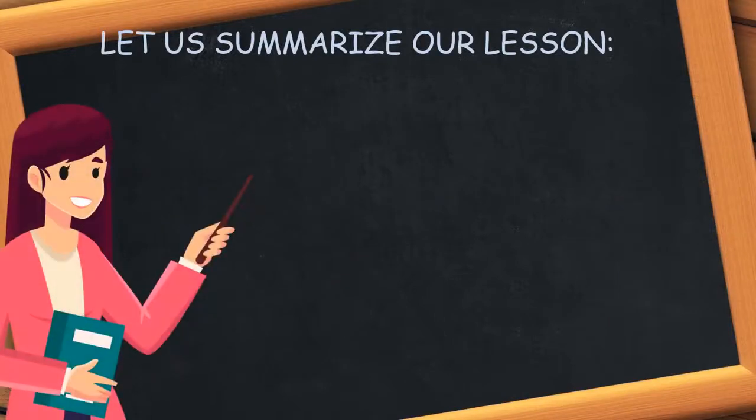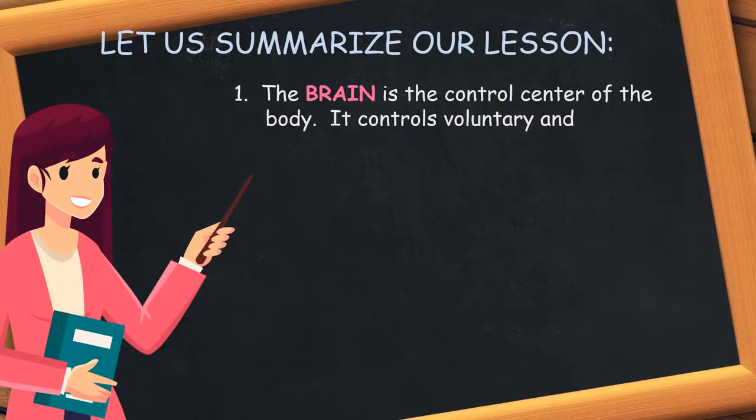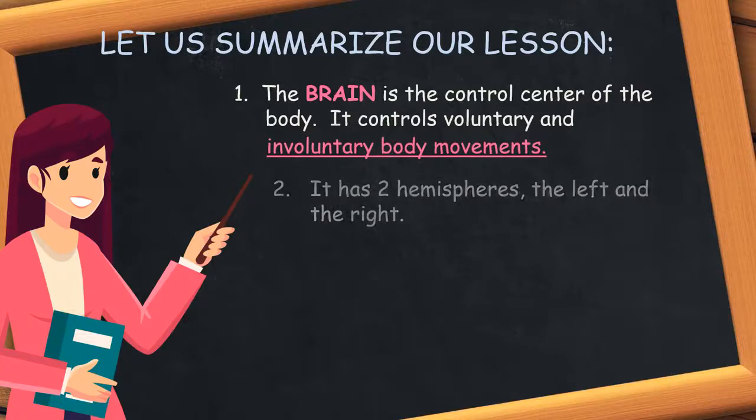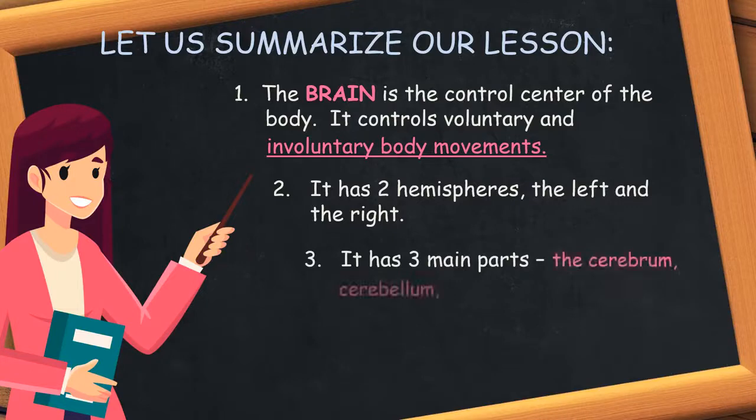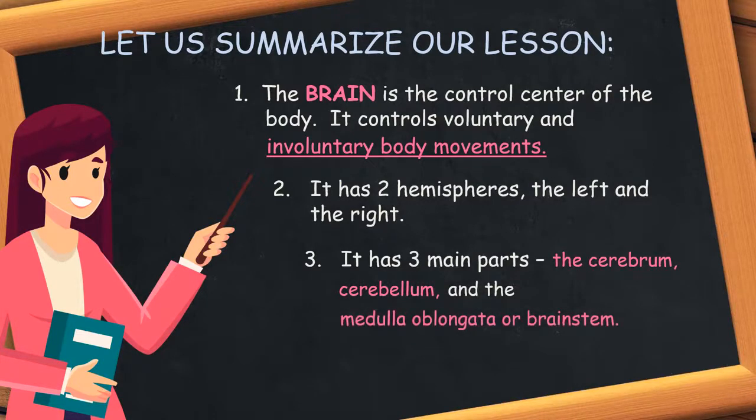Let us summarize our lesson. The brain is the control center of the body. It controls voluntary and involuntary body movements. It has two hemispheres, the left and the right. It has three main parts: the cerebrum, cerebellum, and the medulla oblongata or brain stem.